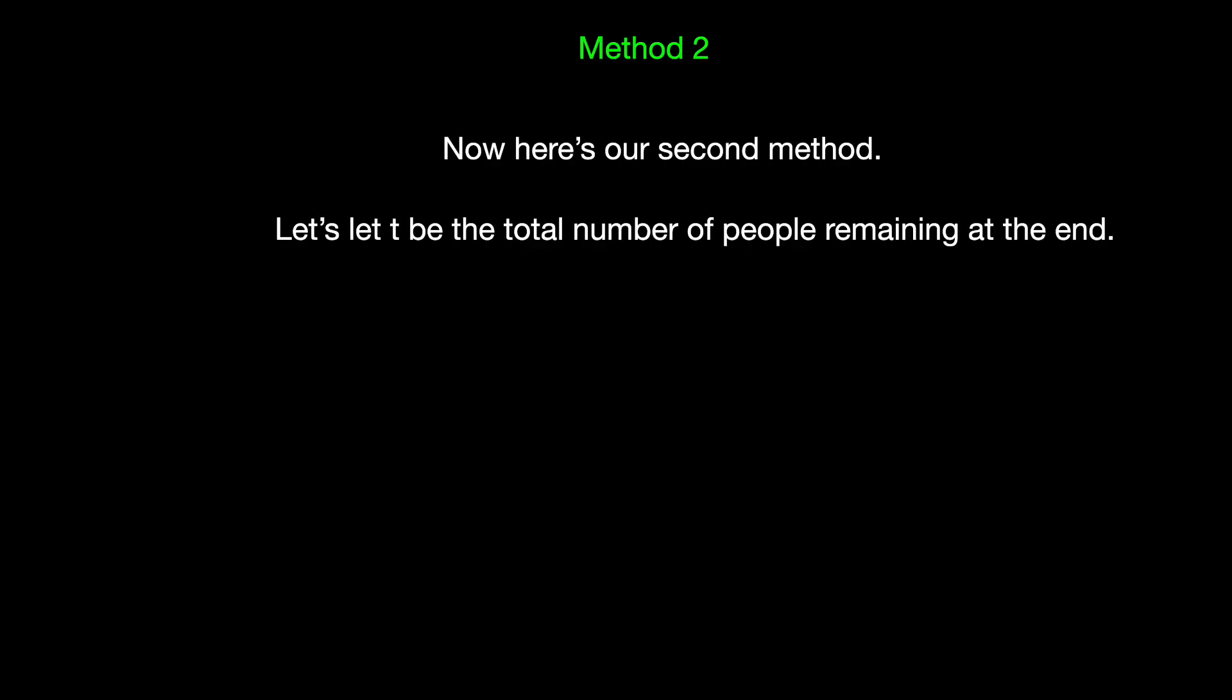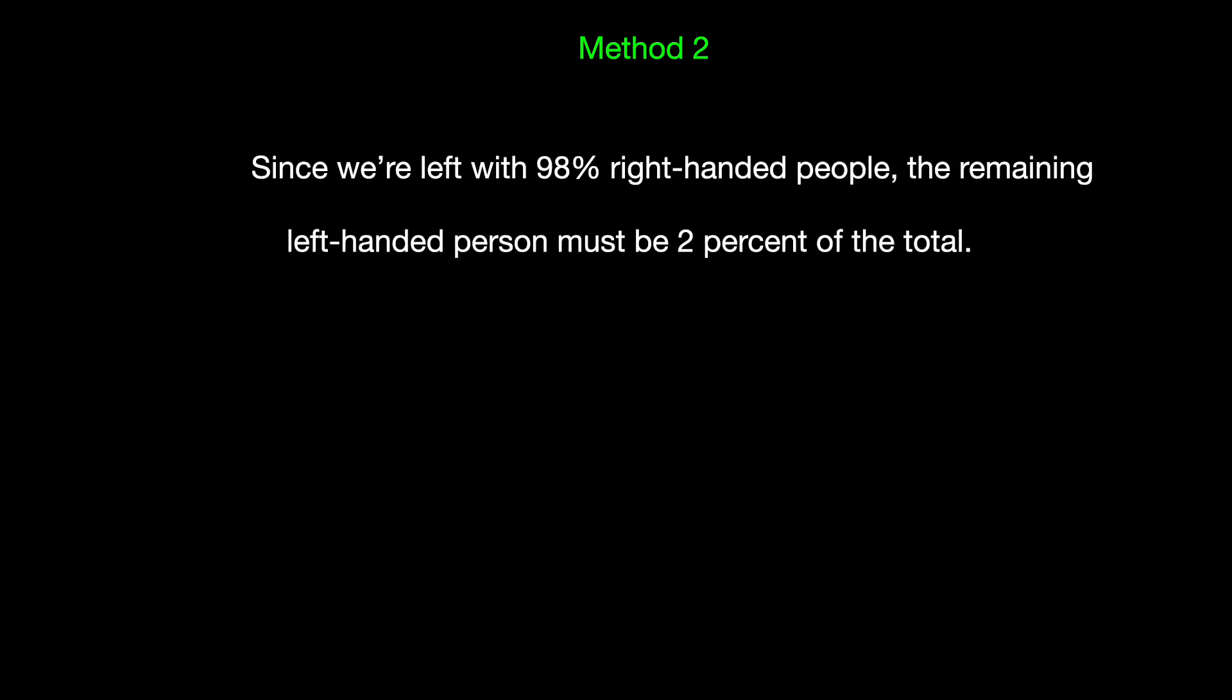So here's our second method. Let t be the total number of people remaining at the end. Since we're left with 98% right-handed people, the remaining left-handed person must be 2% of the total.